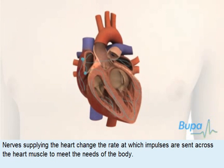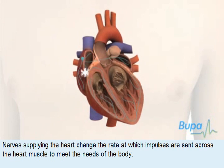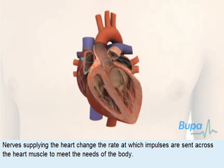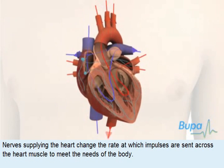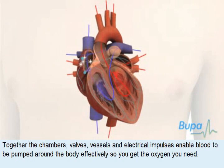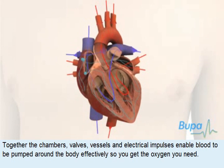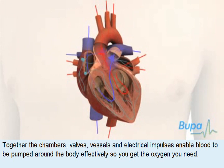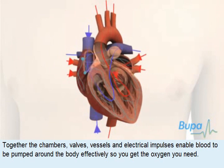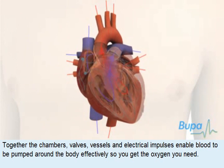Nerves supplying the heart change the rate at which impulses are sent across the heart muscle to meet the needs of the body. Together, the chambers, valves, vessels and electrical impulses enable blood to be pumped around the body effectively so you get the oxygen you need.